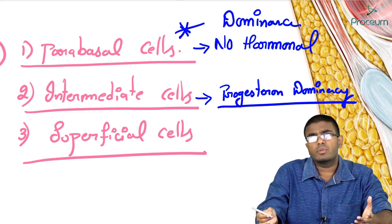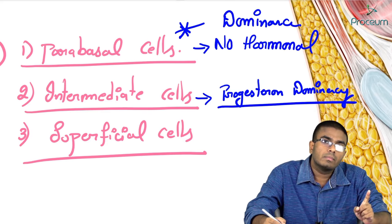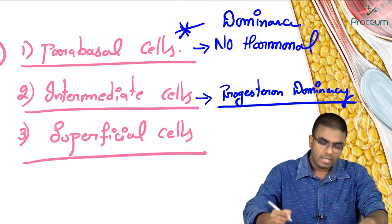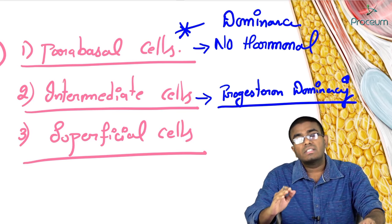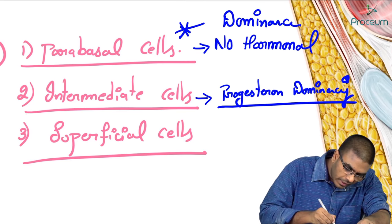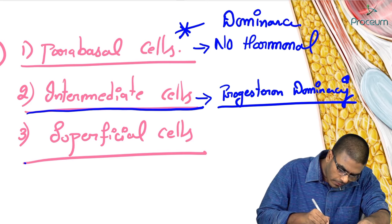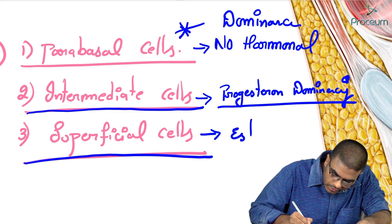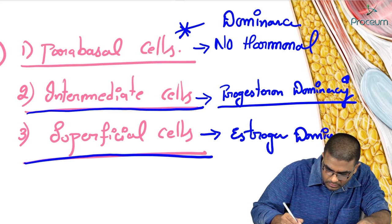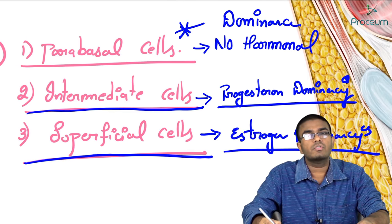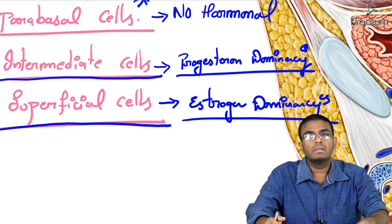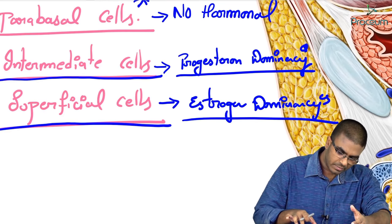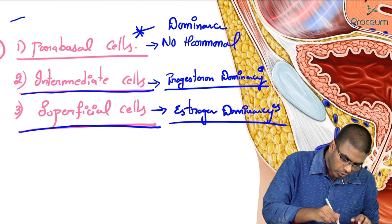Superficial cells are more in number during estrogen dominance, which occurs during the first half of the menstrual cycle — the proliferative or follicular phase.